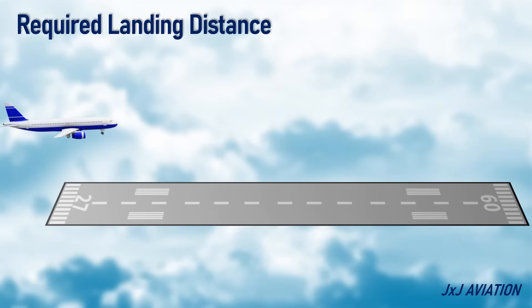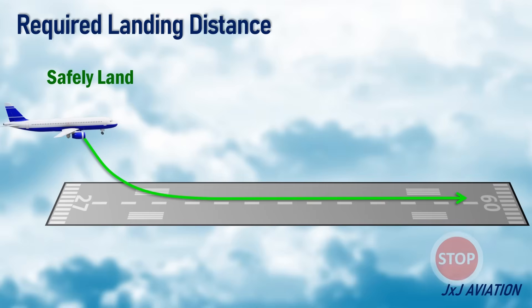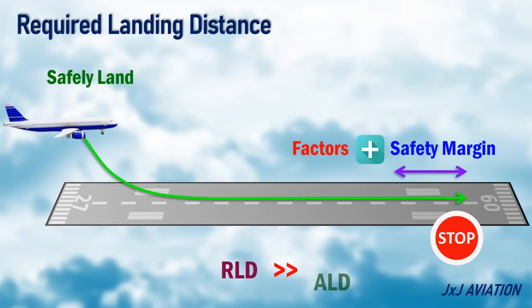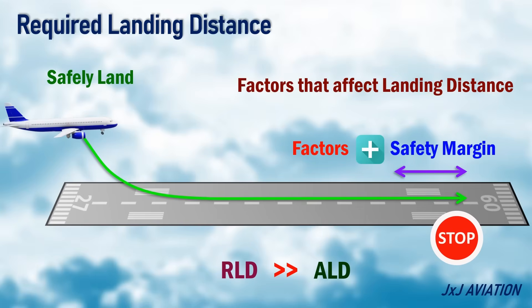Required Landing Distance. The required landing distance of an aircraft is the distance needed for an aircraft to safely land and come to a complete stop, based on actual conditions or factors. Because of these factors, and the inclusion of a safety margin, the RLD may be longer than the ALD. To understand how the different factors affect the landing distance, let's consider an aircraft which is on the correct approach speed and glide path towards the runway.